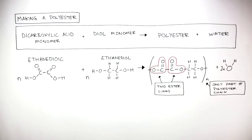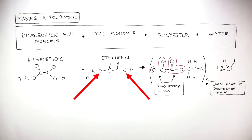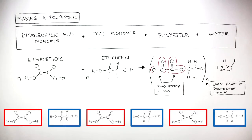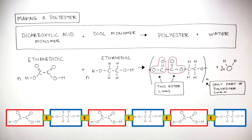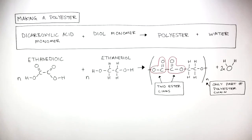A polyester can form because there is a functional group at the end of each monomer. So at the end of each monomer, an ester link forms, allowing a long polyester chain to be able to form.